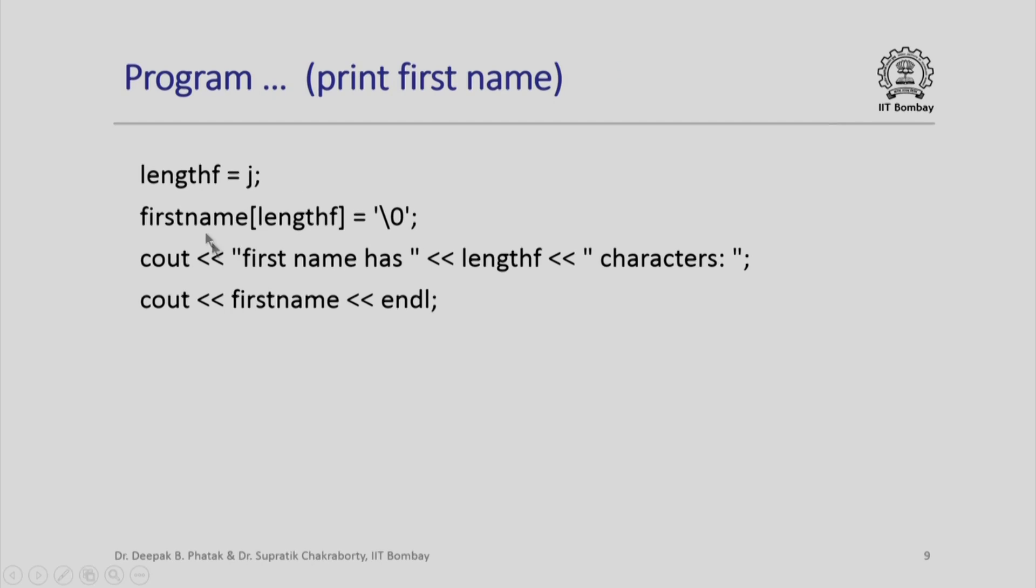We can now put j, the current value of j, as the length of firstname. Remember j would have been incremented 1 beyond whatever are the characters that we have assembled. We can simply put at this point the backslash 0 or the terminator character in the firstname string and print out the firstname string.